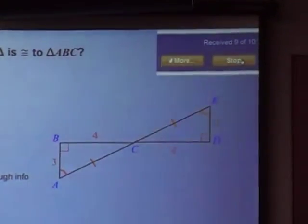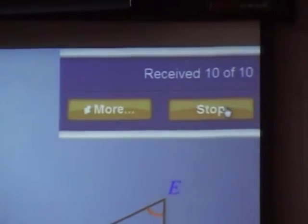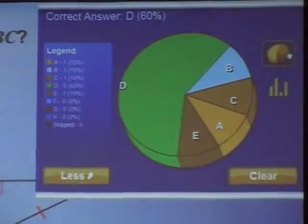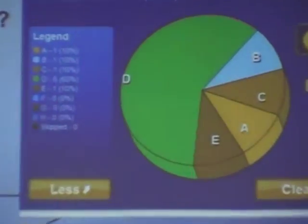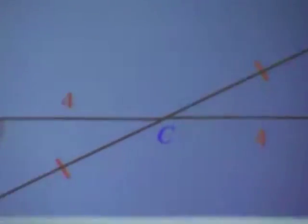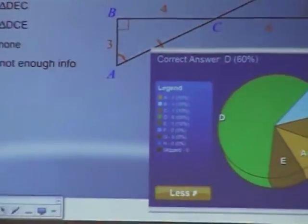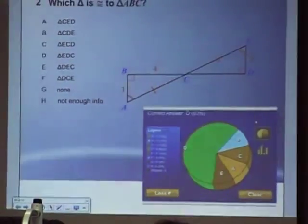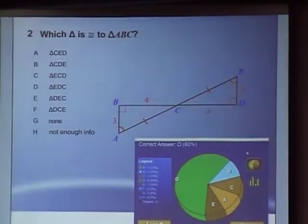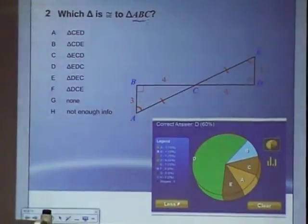Everybody check your clicker, make sure you're sitting there — you see your grade, your score. Not quite as accurate this time. Let me move this down out of the way so you can see the figure. The correct answer was D. Let me walk you through how I would do this. This is a little bit tougher, isn't it? We are interested in triangle A, B, C.